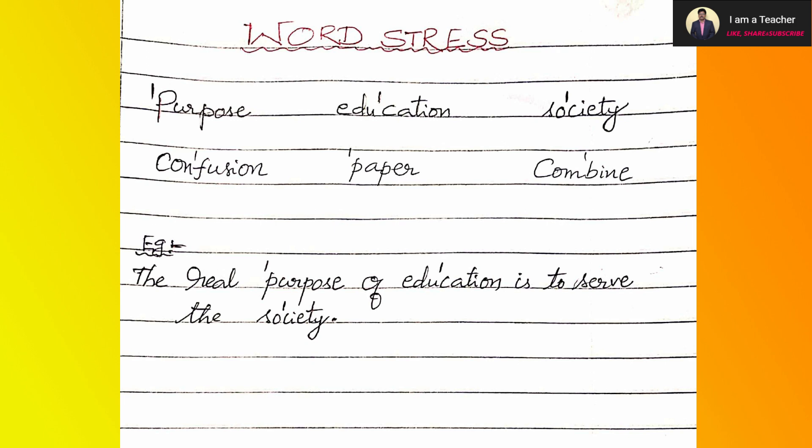Look at the examples — look at the words shown on the screen: purpose, education, society, confusion, paper, combined. One sentence is given as a model. Listen to my pronunciation: 'The real purpose of education is to serve the society.' Here I have pronounced all the words without proper stress marking. If we use stress marking, the pronunciation will be like this: 'The real purpose of education is to serve the society.' Here I have pronounced the words with proper stress marking.